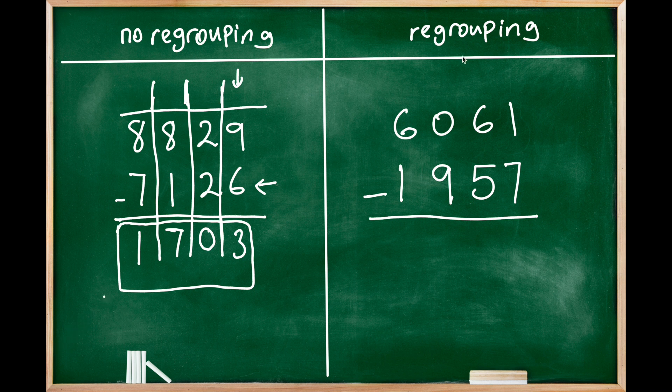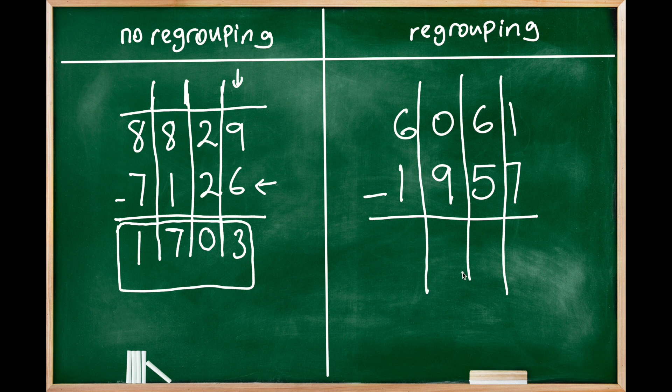We will do that in the second example. So let's get started with the ones place: 1 take away 7. So we see that the second number is bigger, so we can't do this. There is no 7 in 1 that we can take away.